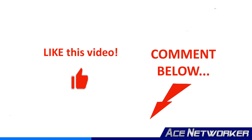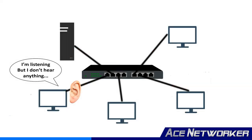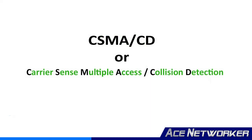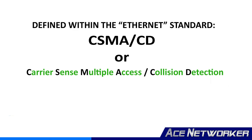Some of the other things defined by the Ethernet standard include how devices listen to the network media to see if they are allowed to transmit, and what happens when two or more devices on the same network segment transmit at the same time and you get what's called a collision. This collision standard is called CSMA/CD, which stands for Carrier Sense Multiple Access with Collision Detection, and it is also defined within the Ethernet standards.